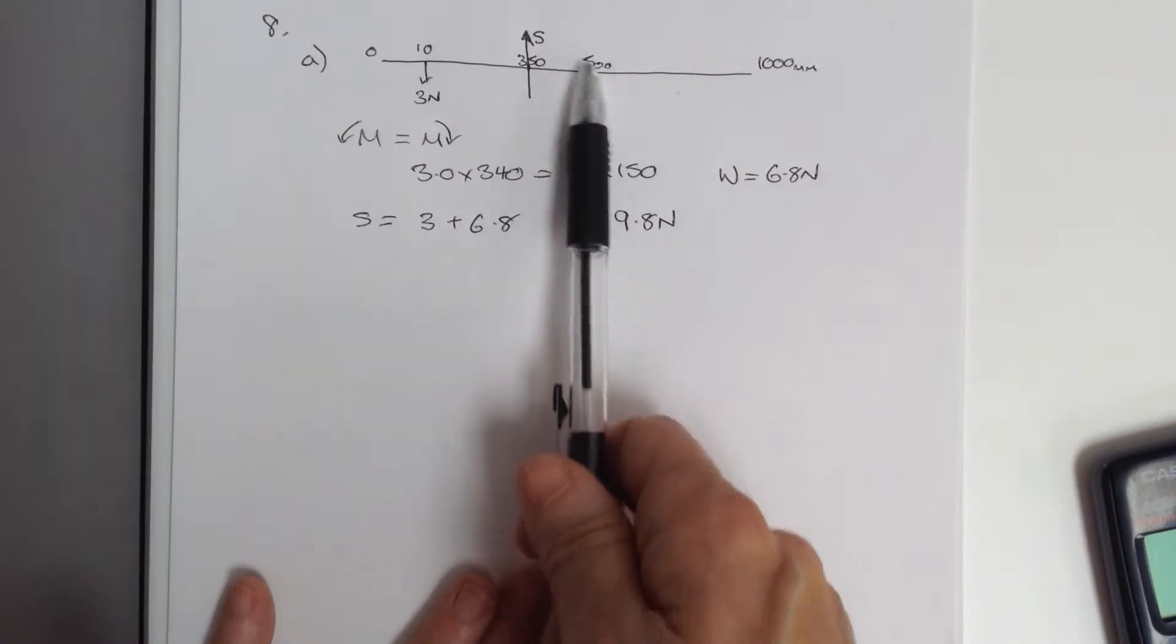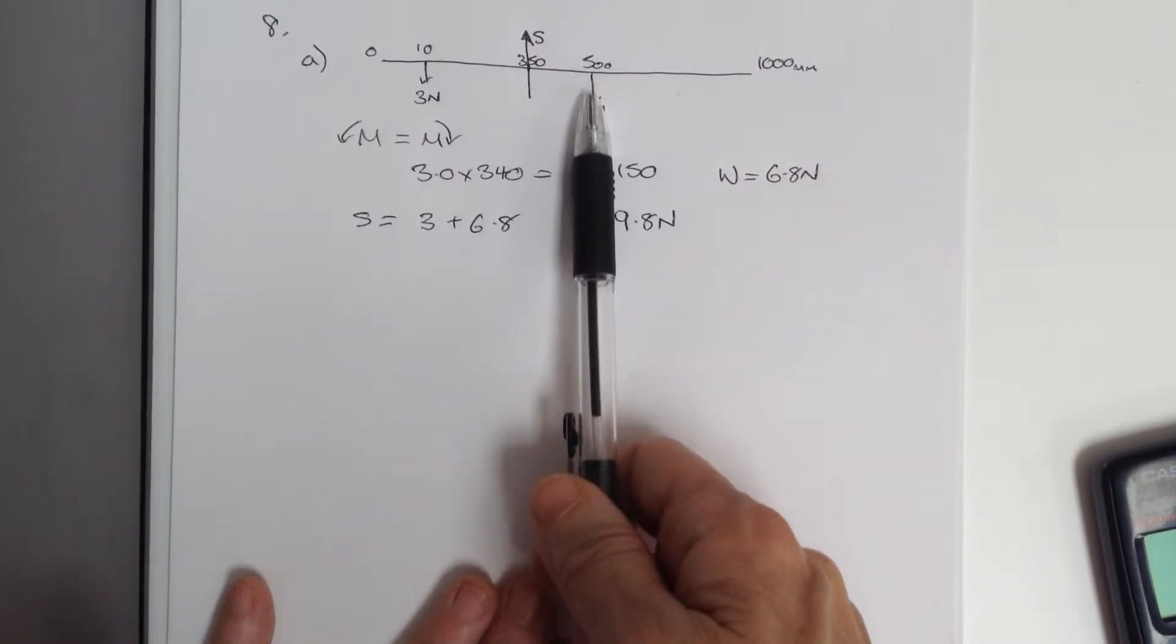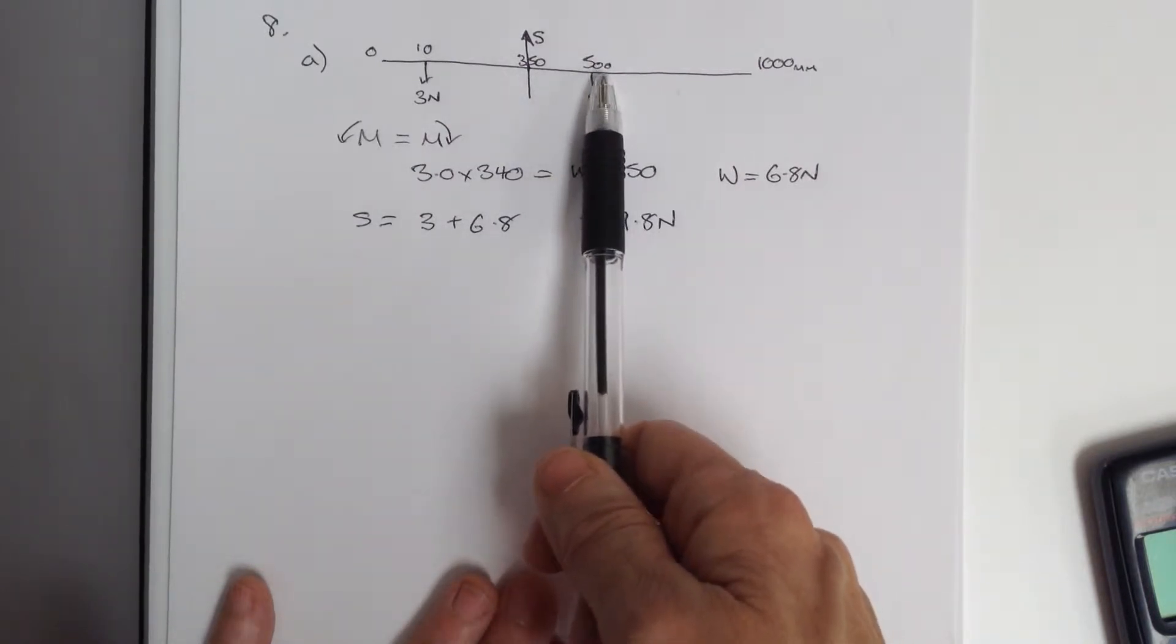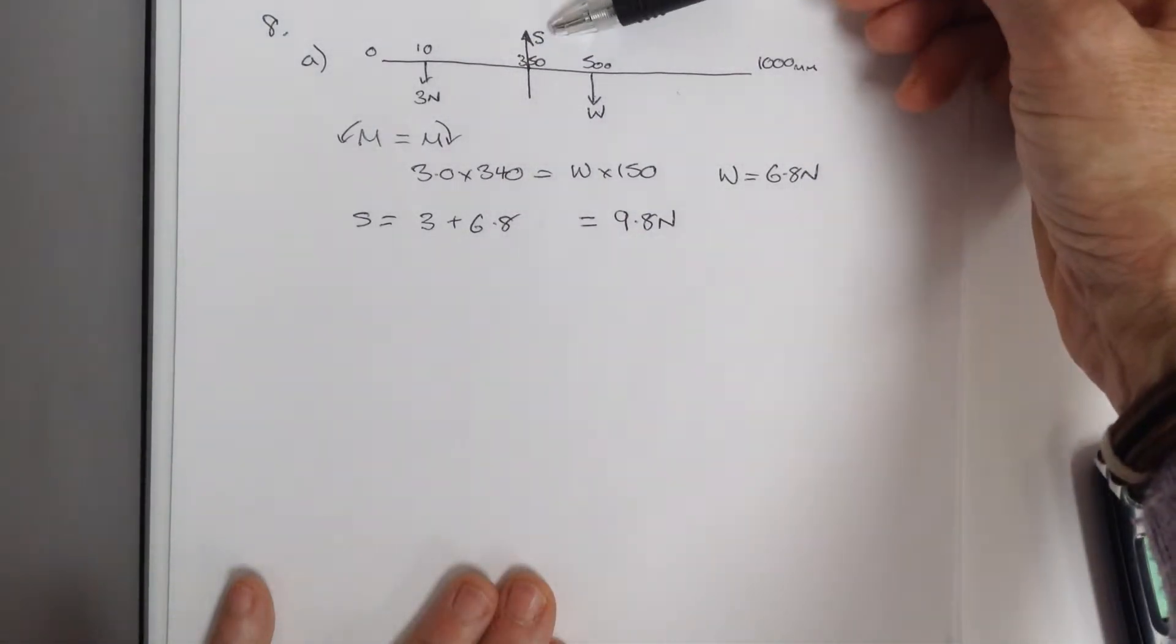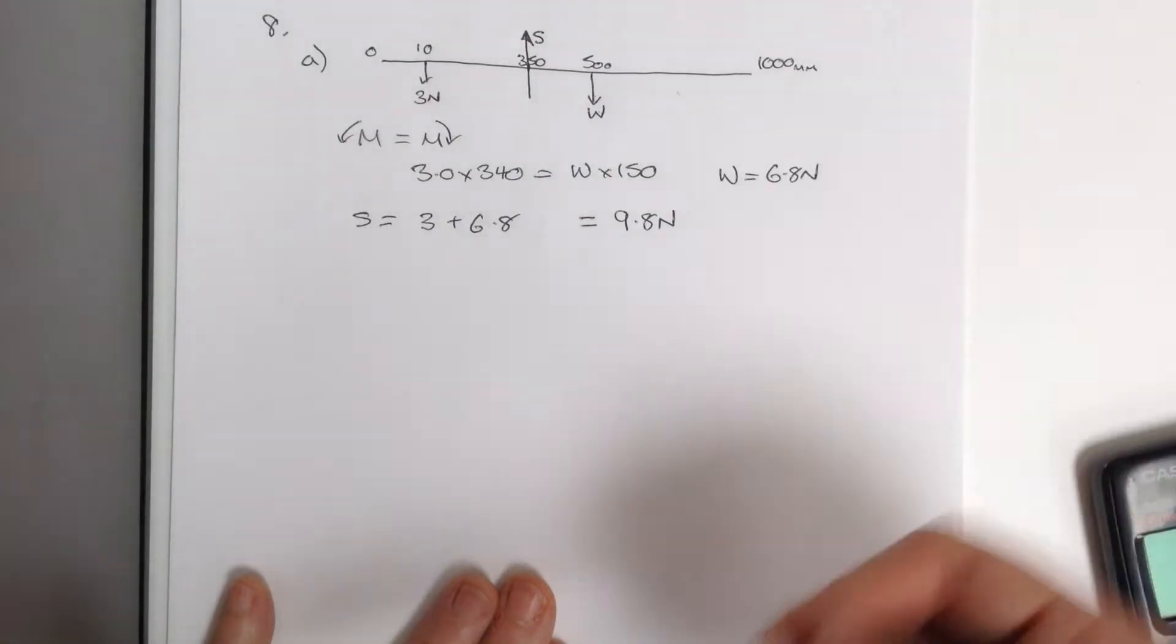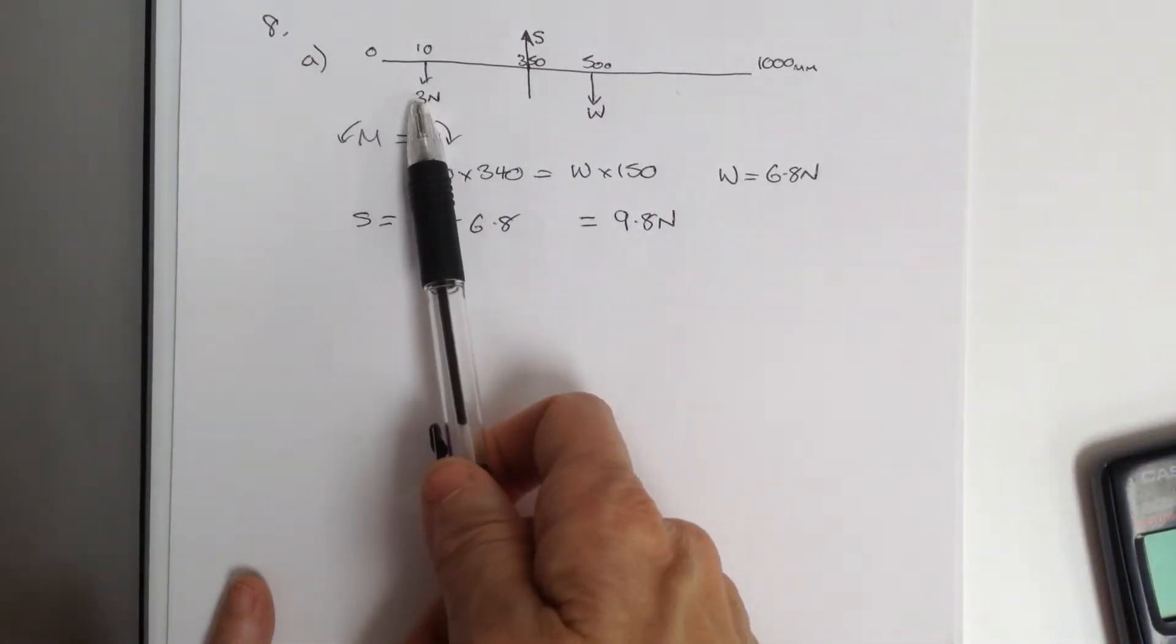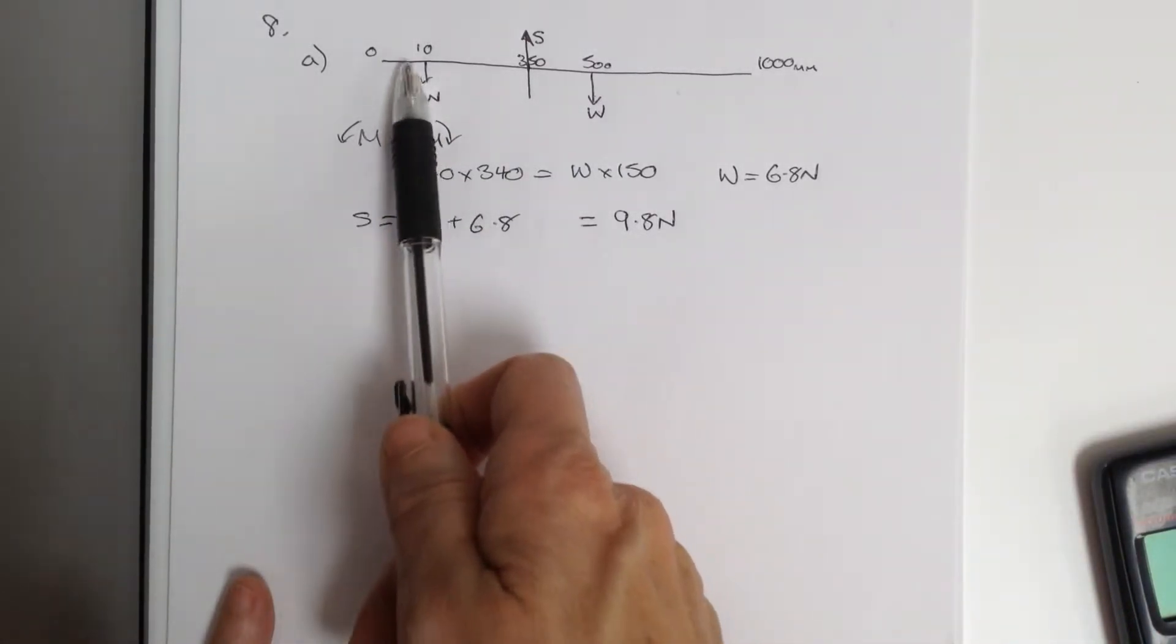The weight of the rule is going to act because it's a uniform rule in the middle at the 500 mark. The knife edge is at 350 and it has a support force here pushing up. And the question says that it's balanced by a 3 newton weight acting at 10.